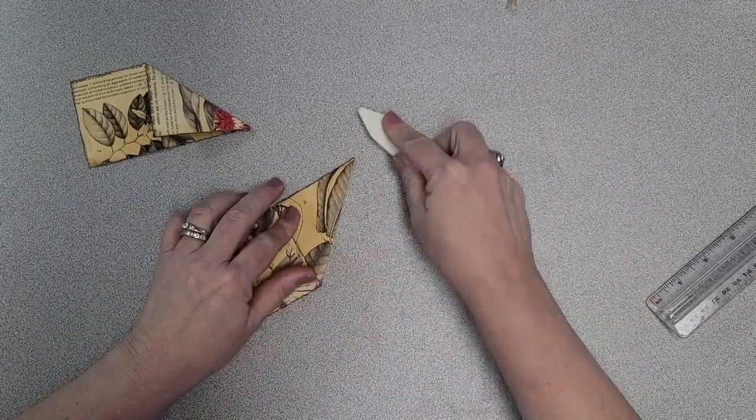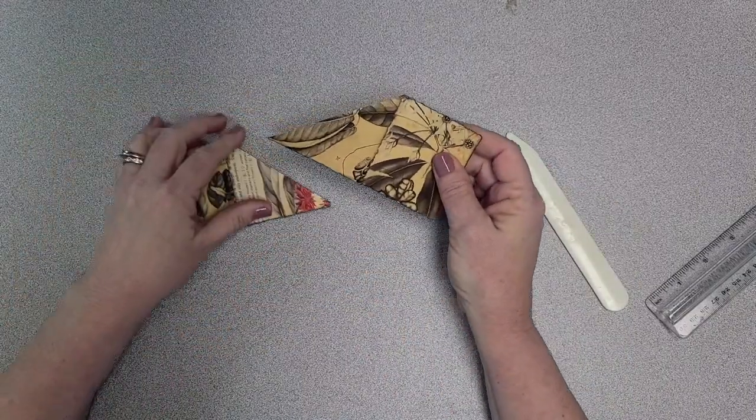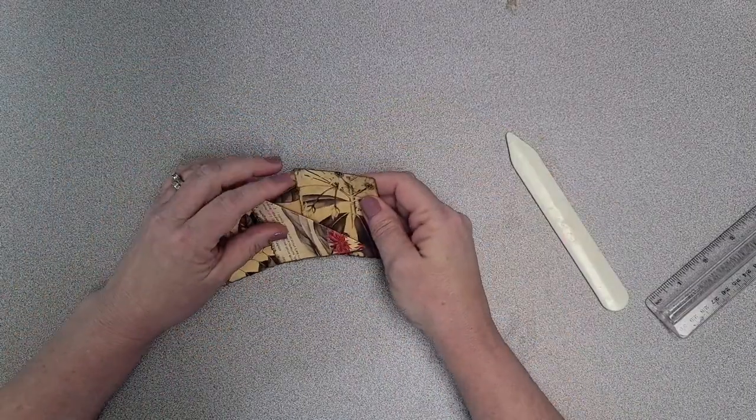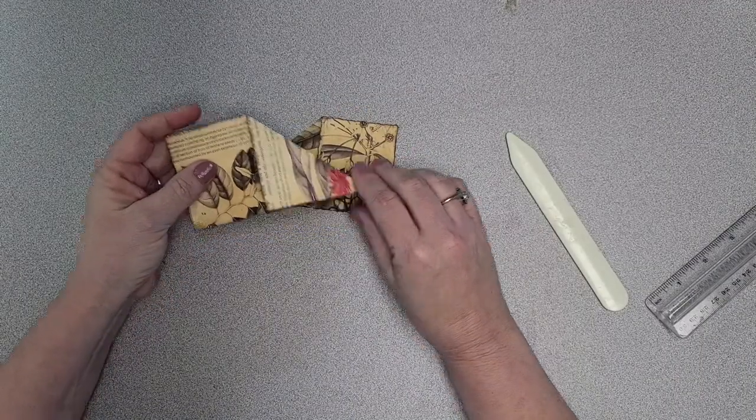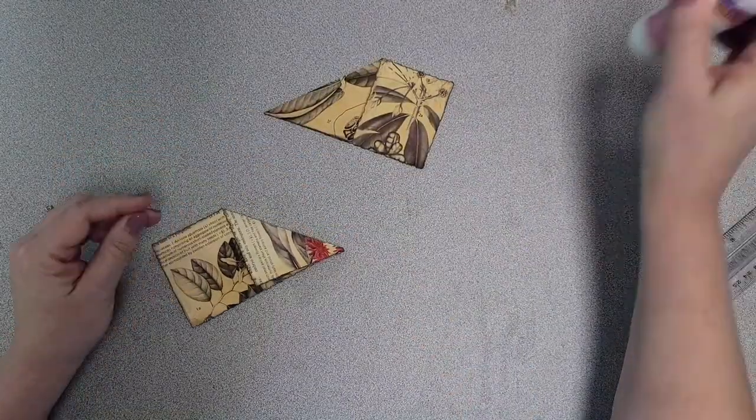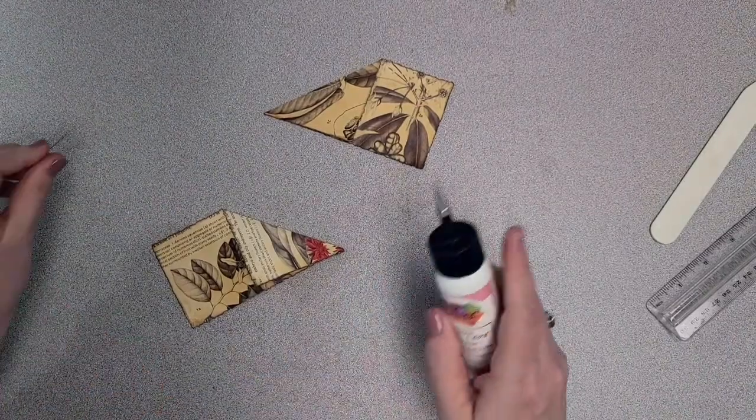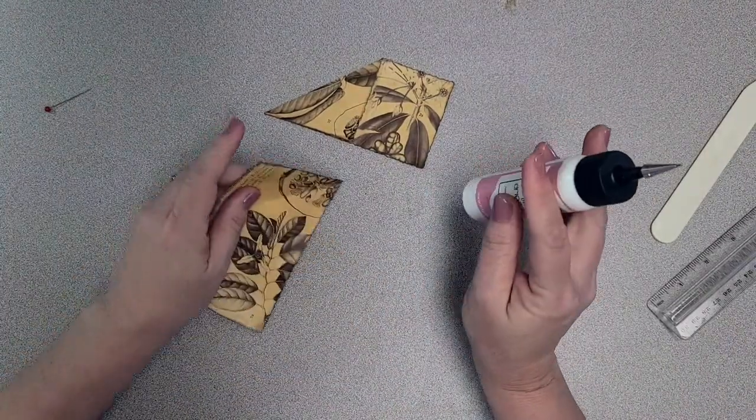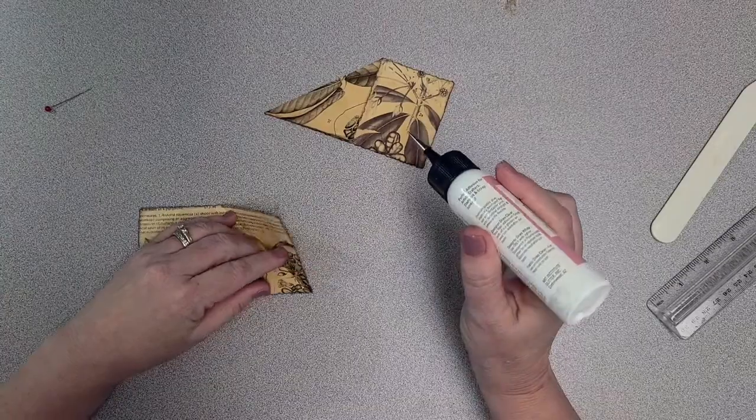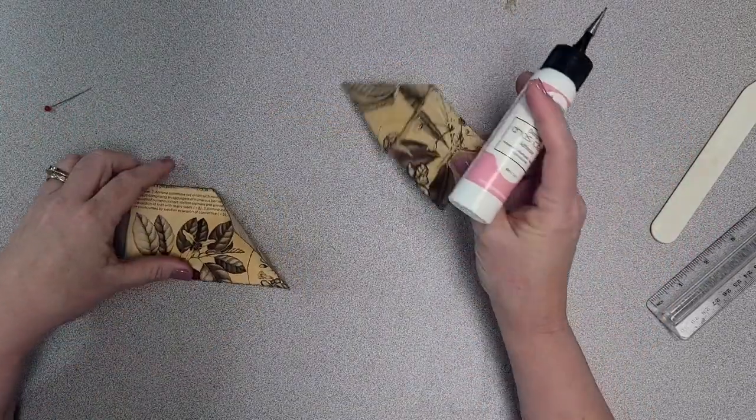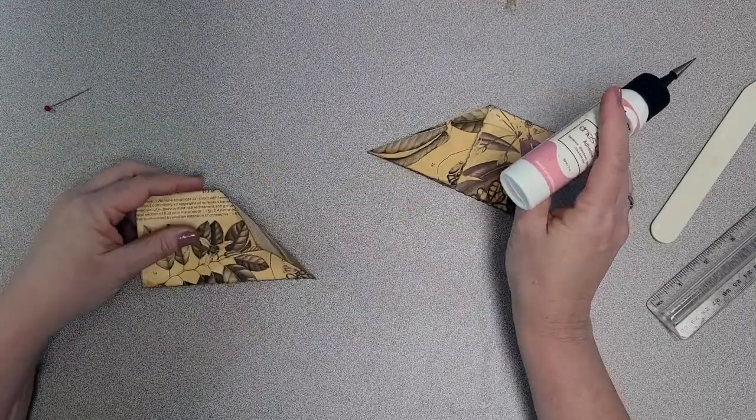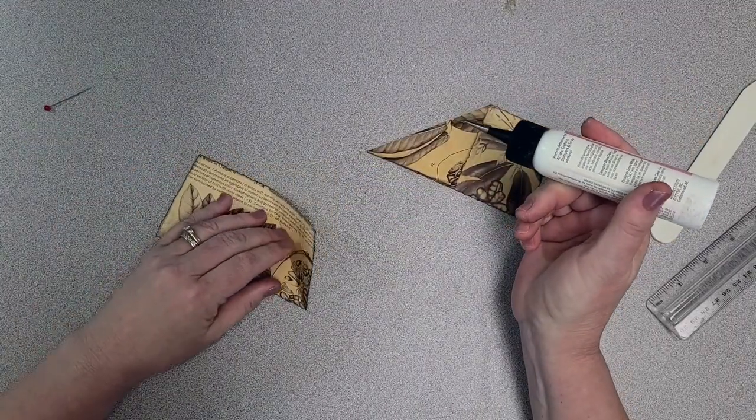Like I said, I used a tear ruler. You don't have to do that—hand tear, whatever you want to do. Because they're torn, they're not going to be exact. They're five by two and three-quarter, but that's not going to be exact because they are torn.